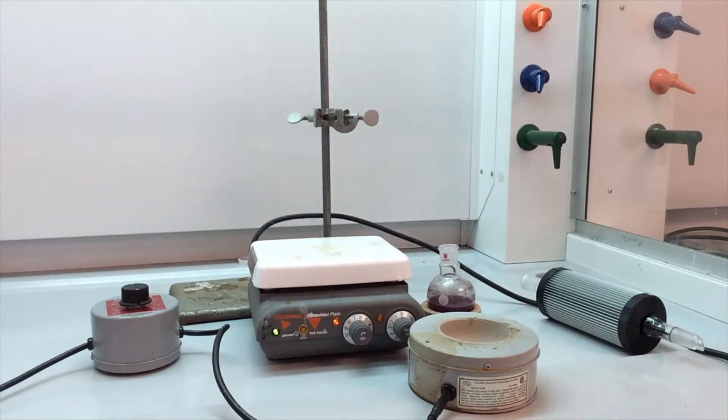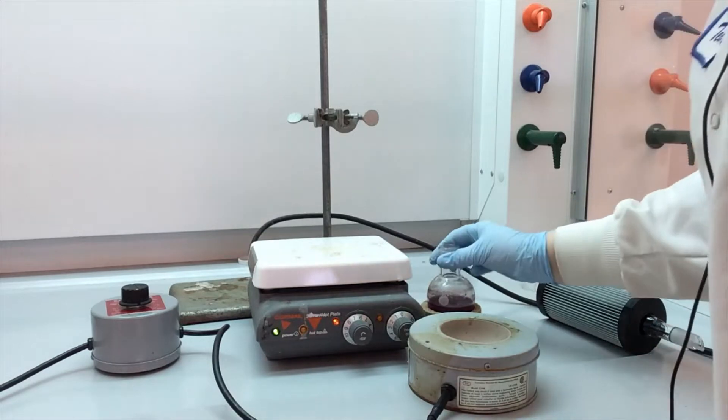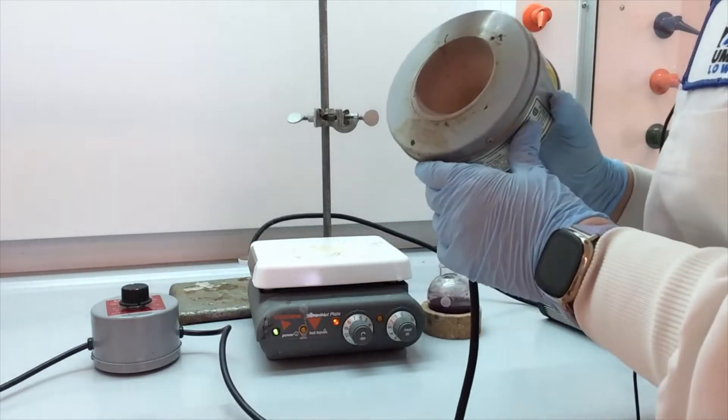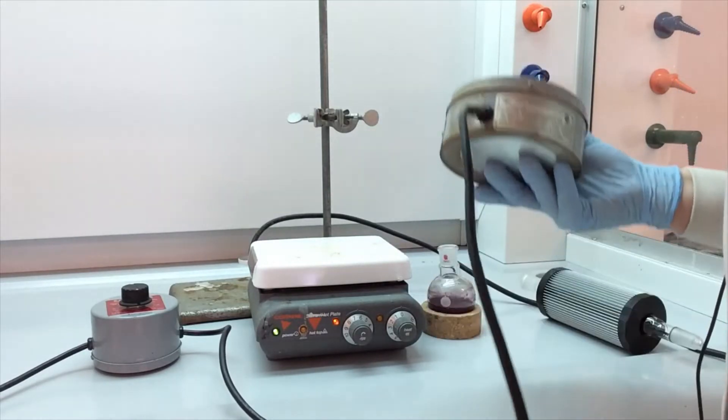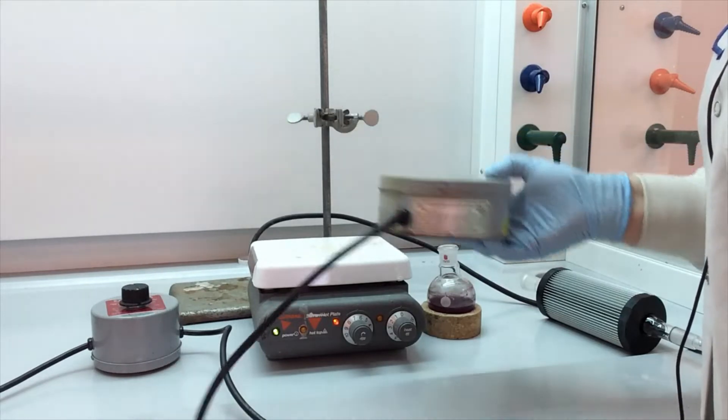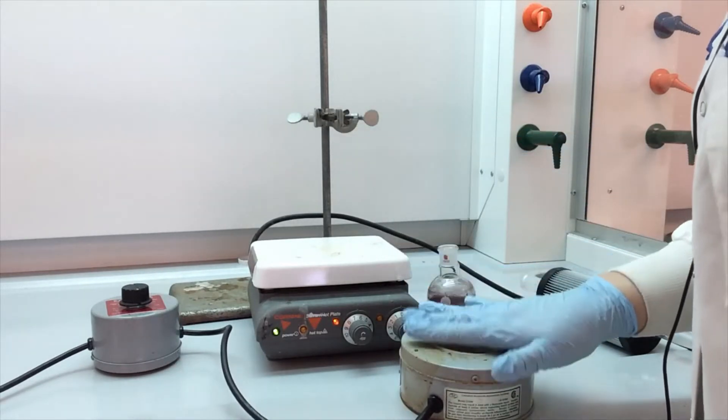So the round bottom flask first. In order to heat a round bottom flask effectively, we need our heating mantle. This consists of two pieces. The first piece is just the mantle that gets hot.